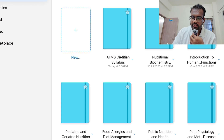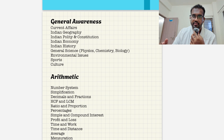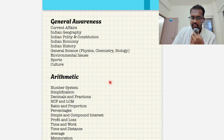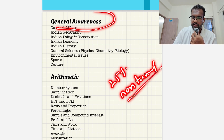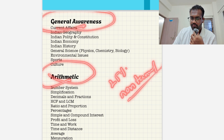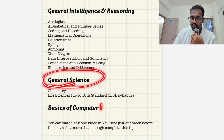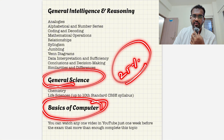As you can see here, the AIIMS dietitian syllabus is open. The total syllabus for the AIIMS CR dietitian is 75 percent from professional abilities, and the remaining 25 percent is from non-technical sections like general awareness, arithmetic, general intelligence, general science, and basic computers. Together these carry 25 percent of the main syllabus.